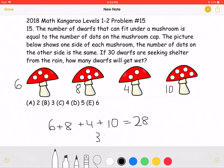Now we will take thirty, subtract twenty-eight, and find that a total of two dwarves will get wet.